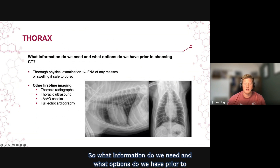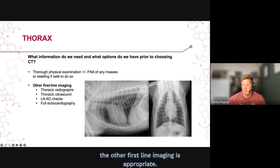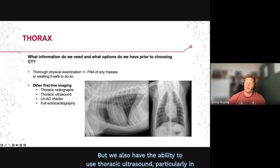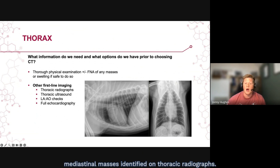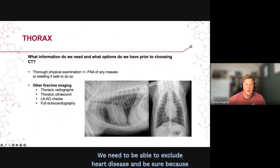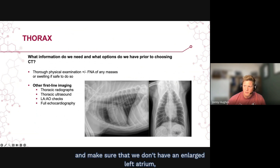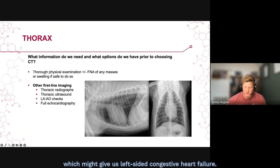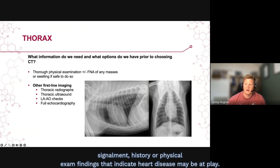What information do we need and what options do we have prior to choosing CT for the thorax? A thorough physical examination, plus or minus sampling of any superficial swelling or masses, is good. Thoracic radiographs are always appropriate and probably the most cost-effective way of imaging the thorax. We also have thoracic ultrasound, particularly for pleural fluids, pericardial fluids, or mediastinal masses identified on radiographs. We need to exclude heart disease, since CT isn't primarily used for functional heart disease. We can perform a left atrium to aortic ratio to check for an enlarged left atrium suggesting left-sided congestive heart failure, or consider full echocardiography if history or physical exam findings indicate heart disease.